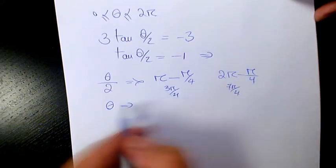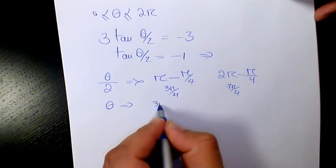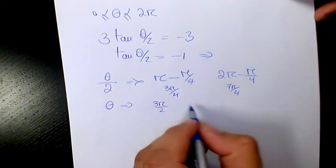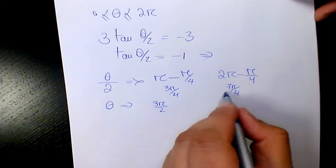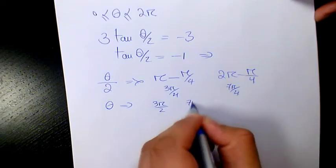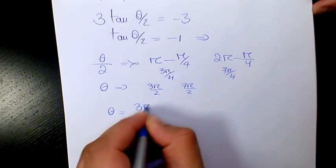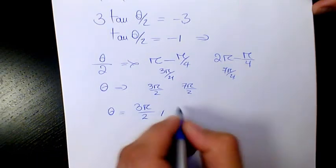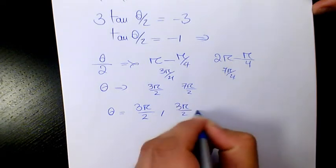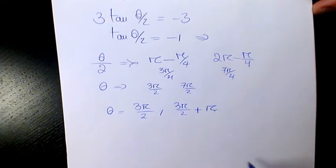So θ will be 3π/2 and this one is going to be 7π/2, or I can write it as 3π/2 and 3π/2 plus π.